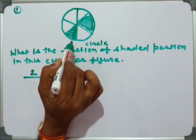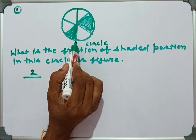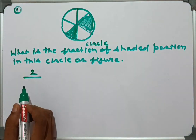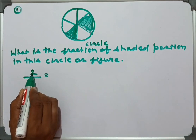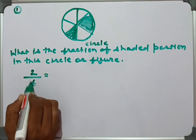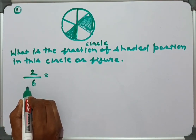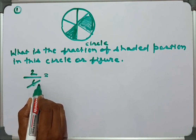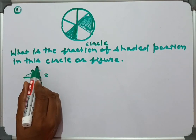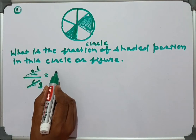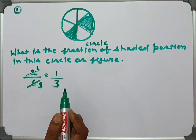You can see this circle is divided into six equal parts, so six will come in the denominator. Now we simplify this fraction. In the table of two, two threes are six, so we put three. Two ones are two, so the final answer is one by three.